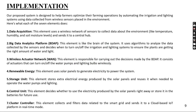Our proposed system is designed to help farmers optimize their farming operations by automating the irrigation and lighting systems using data collected from wireless sensors placed in the environment. Here's what each of the seven elements does. First, data acquisition: this element uses a wireless network of sensors to collect data about the environment — like temperature, humidity, soil moisture levels, etc. — and sends it to a central hub.